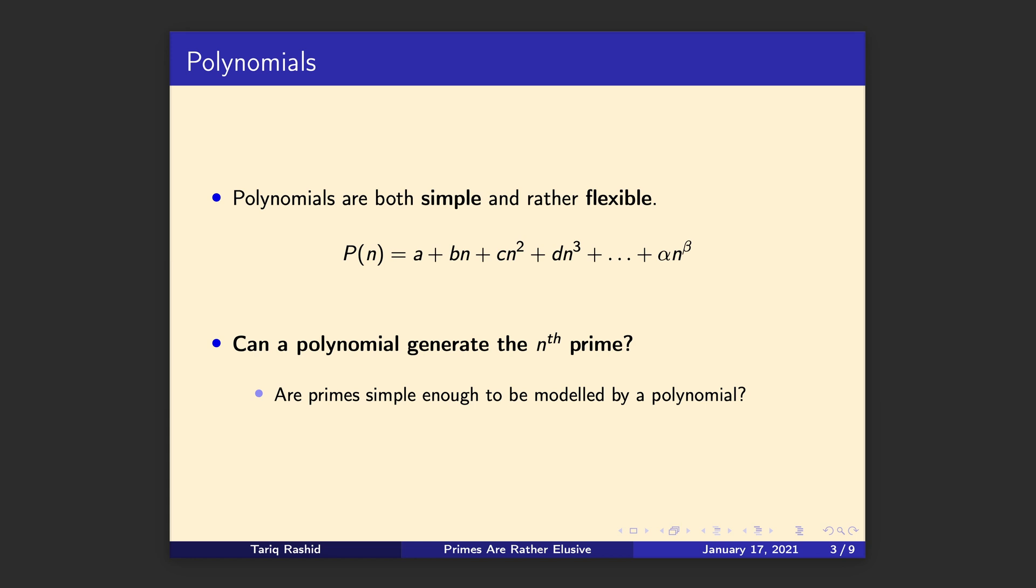Polynomials are a good kind of balance between simplicity and flexibility. When we do statistics and machine learning and other interesting things, we can often find polynomials that fit the data. We know also that some interesting functions like sine and logarithm can be approximated fairly well with polynomials. So polynomials are fairly flexible, but also rather simple. That's a good reason to choose them for this question. Can simple functions that are polynomials generate the nth prime number? Yes or no? That's the question.